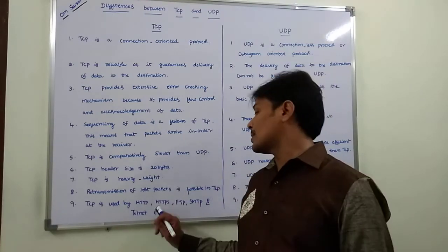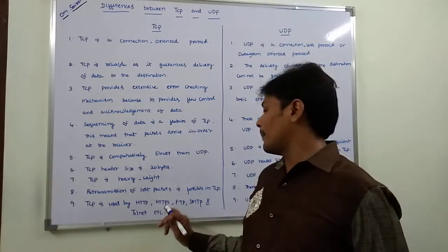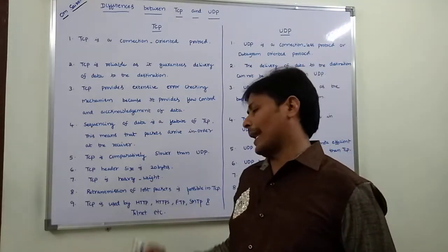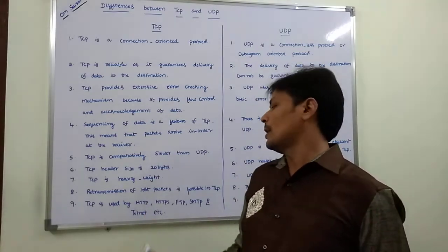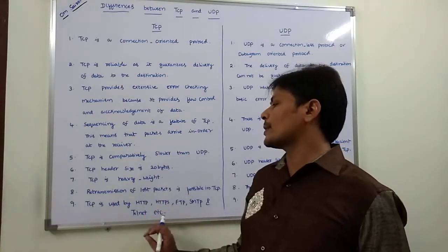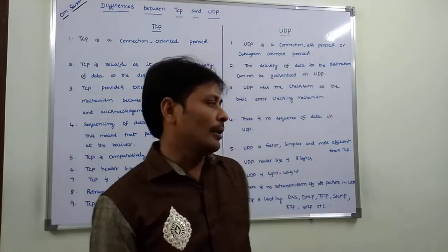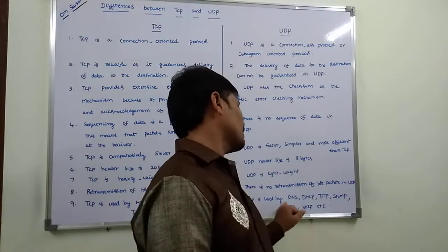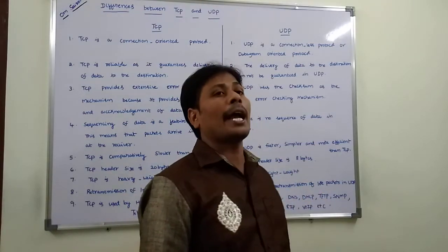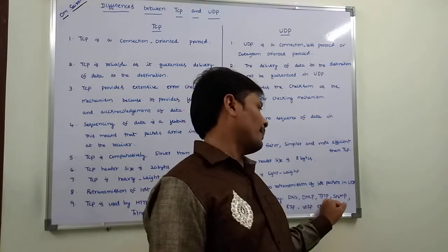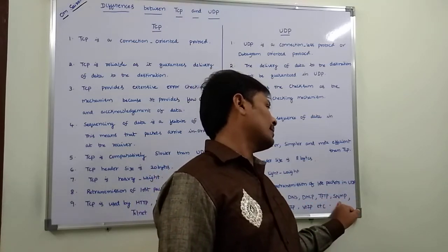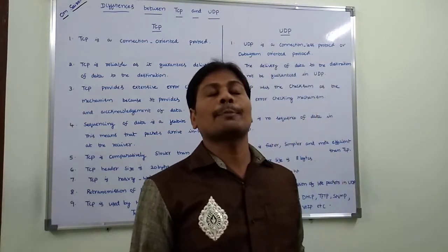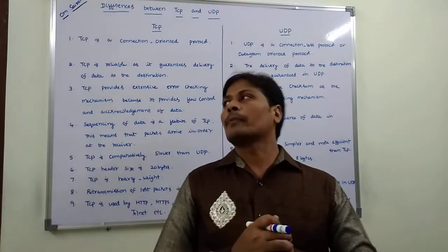TCP is used by HTTP protocol, HTTPS protocol, File Transfer Protocol (FTP), Simple Mail Transfer Protocol (SMTP), and Telnet. All these protocols use Transmission Control Protocol. But UDP — User Datagram Protocol — is used by DNS (Domain Name Service), DHCP (Dynamic Host Configuration Protocol), TFTP, SNMP, RIP, VoIP, and others. These protocols use UDP.